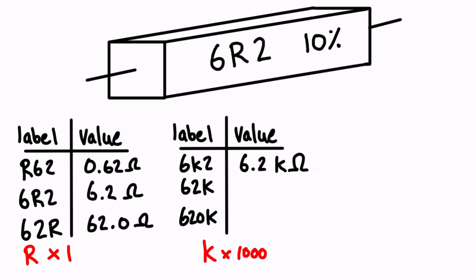So that means that 62K is going to be 62 times 10 to the 3 ohms. And again, if you want, you could rewrite that as 62 kilo ohms. That's why they use the letter K.